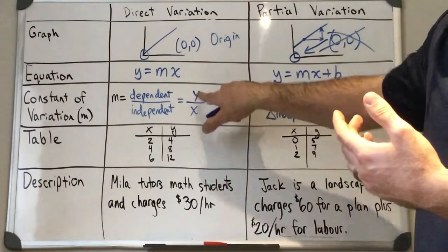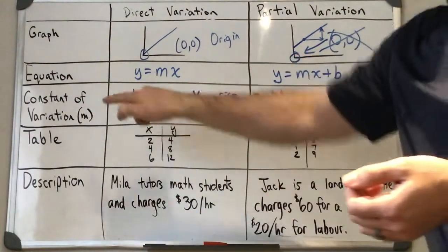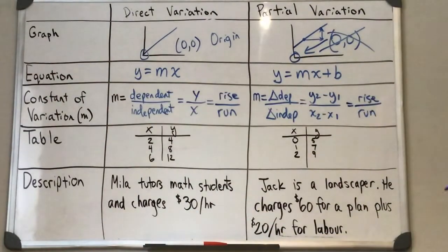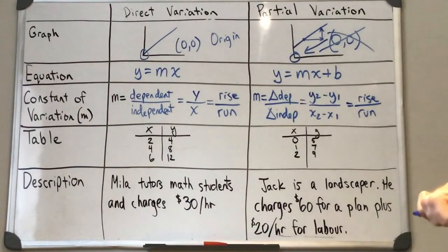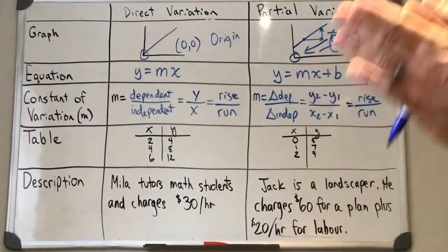So for direct variation, we can divide the y by the x to get the m value, and this one if you want to quickly calculate your m value, you've got to find the difference in the y's and the difference of the x's and divide them.